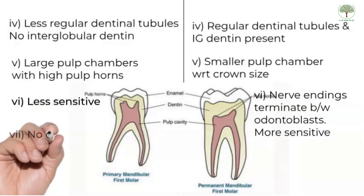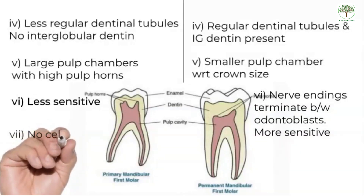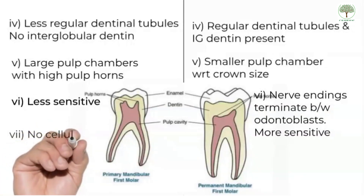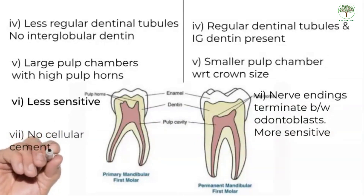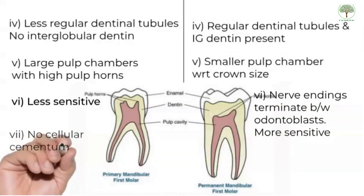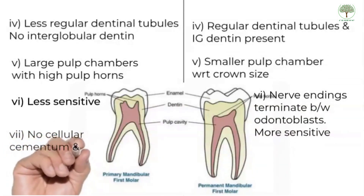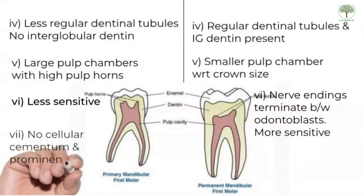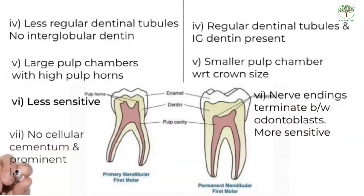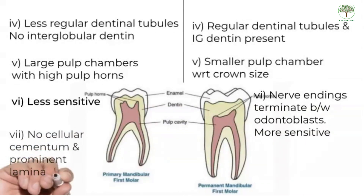The periodontium: the primary teeth have a thinner cementum with the absence of secondary cementum. Also, the IOPA will show a very prominent lamina dura in the primary teeth. The significance of these differences is mainly in clinical treatment and management.